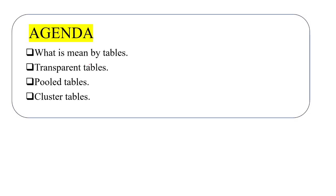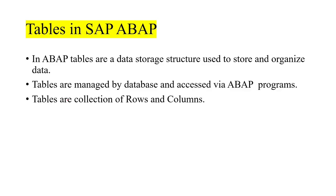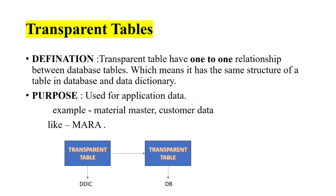Welcome to Saisha Spectrum. In today's lecture we are going to see different types of tables. The agenda covers what is meant by a table, then different types of tables — that is transparent table, pool table, and cluster table. Tables are the data storage structure used to store organized data, managed by a database and accessed by ABAP programs in SAP ABAP. Tables are a collection of rows and columns.